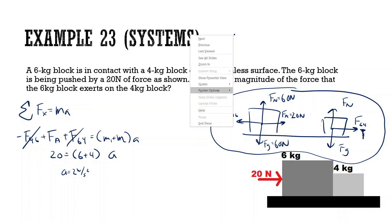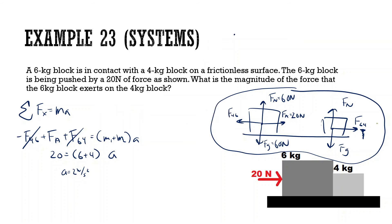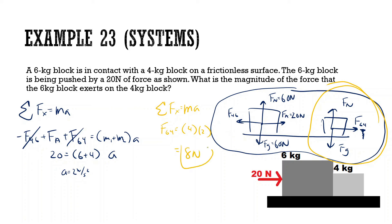Now isolating the 4 kg free body diagram: the only x force is F6-on-4, equal to mass 4 times acceleration 2 — so the force equals 8 newtons. I hope that made sense; watch it back if it didn't.